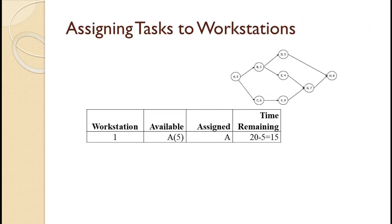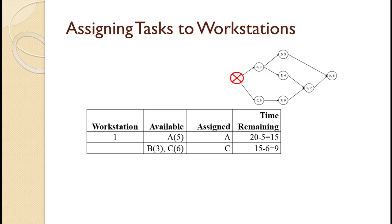We first assign A because it is the only open task, leaving 20 minus 5 equals 15 seconds. With A assigned, B and C can be assigned. C has the longest task time, so we assign it, leaving 15 minus 6 equals 9 seconds. With C assigned, B and F can be assigned. F has the longest task time, so we assign it, leaving 9 minus 9 equals 0 seconds, so we move on to the next workstation.